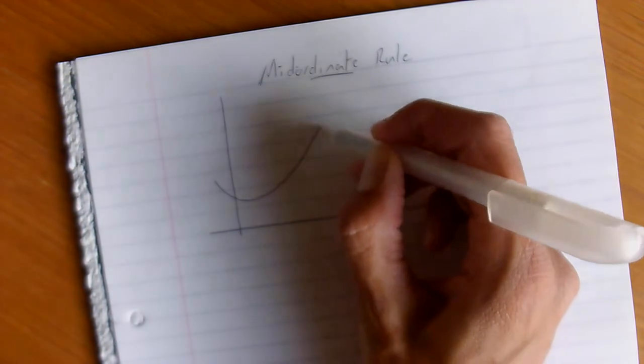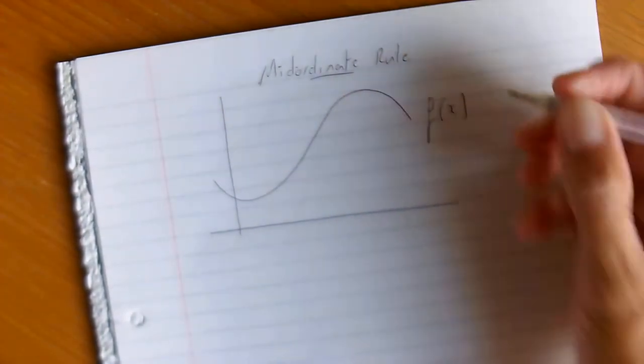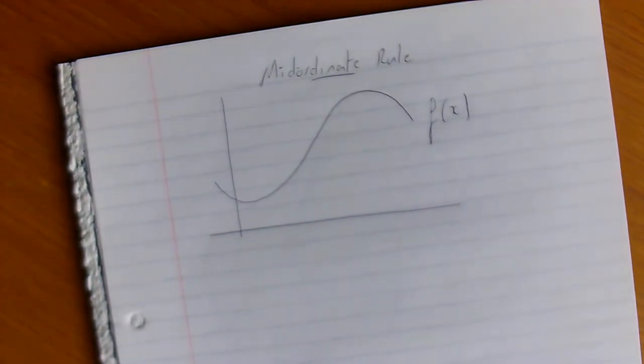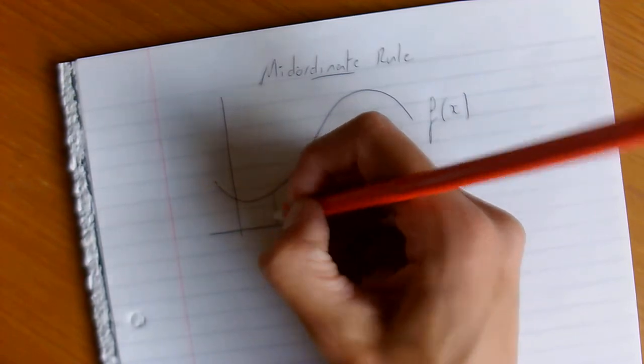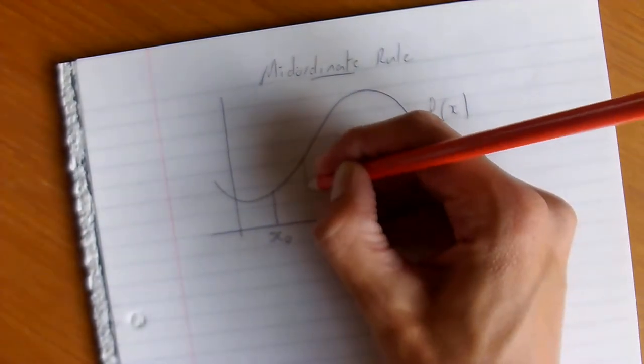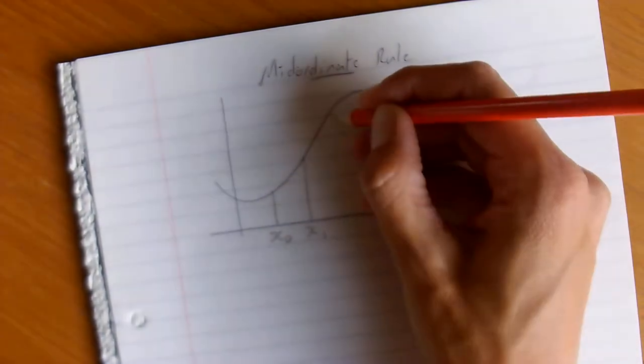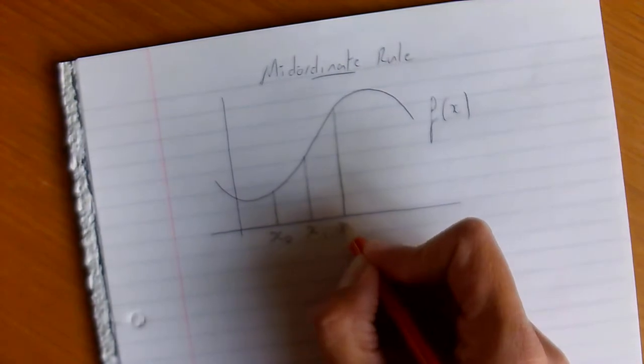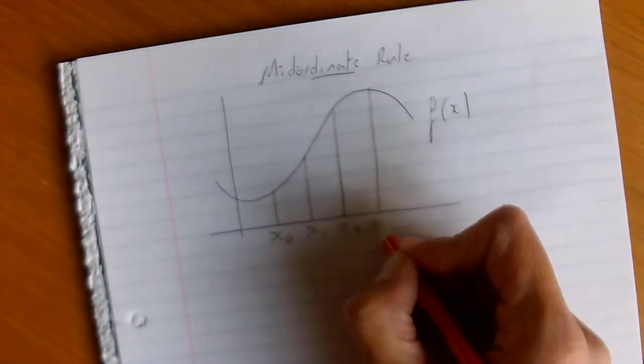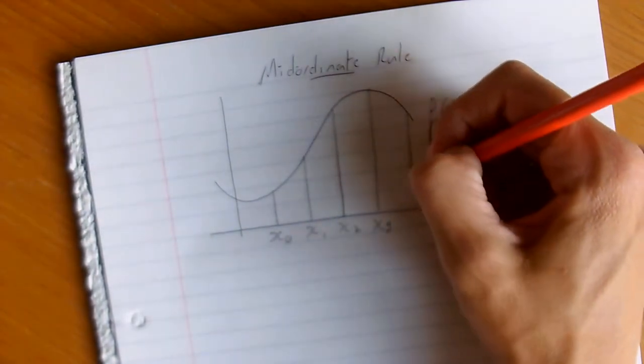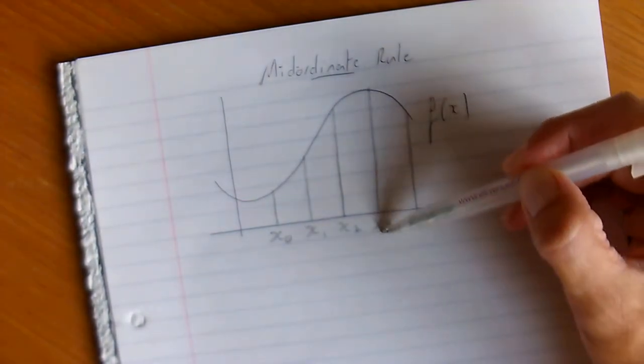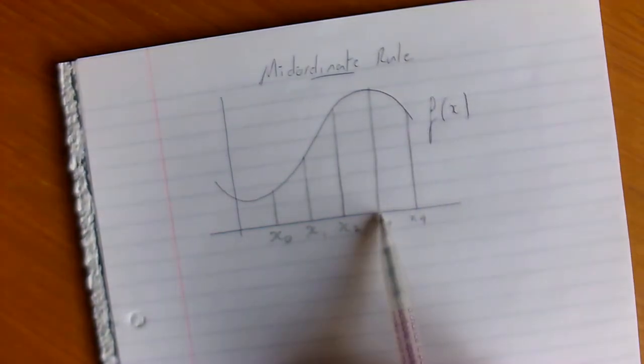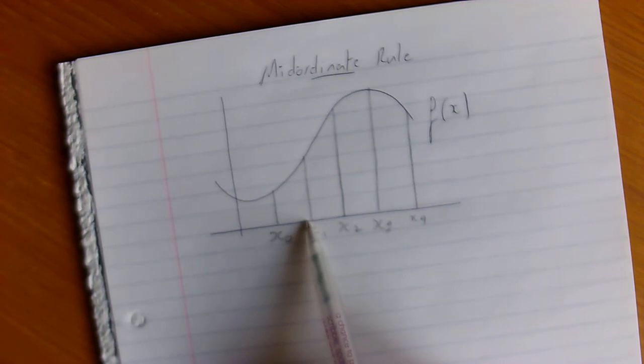So what we can do is take a random function that looks a little bit like so. And again, what we're going to do is split it up so that it's got different ordinates. So we can say that here we'll call this ordinate x0 and we're going to have, again, exactly the same width between the ordinates. I'm going to go up to x4. So these here, these straight lines, these x values are known as the ordinates. And this distance between each pair of ordinates is h.